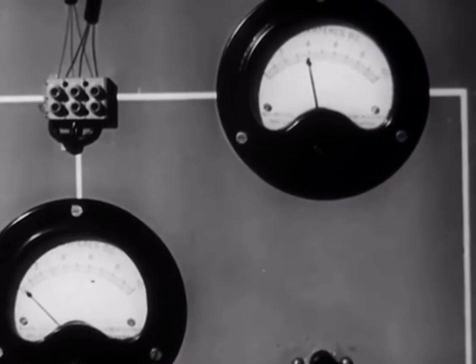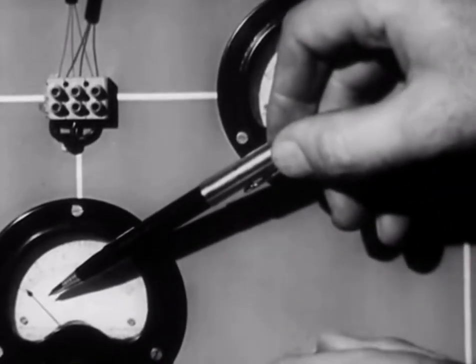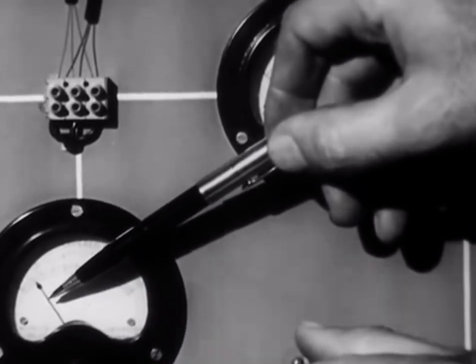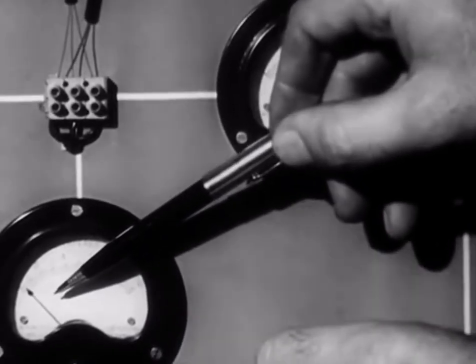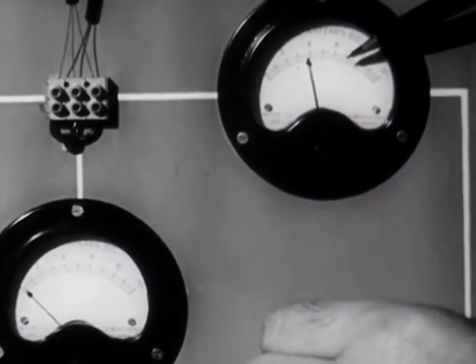Now watch what happens when we vary the base current. Notice that a small change in the base current produces a large change in the collector current. This is the way we obtain amplification.